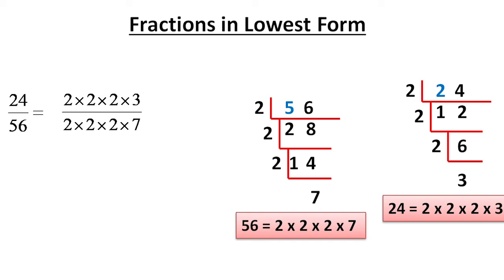So in our fraction 24 by 56, instead of 24 we can write 2 into 2 into 2 into 3, and instead of 56 we can write 2 into 2 into 2 into 7. The common numbers we can cancel. I have used different colors so you can easily understand. First 2 and 2 we can cancel, they are common. Second 2 and 2 we can cancel, they are also common.